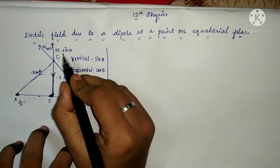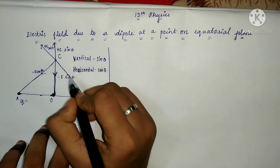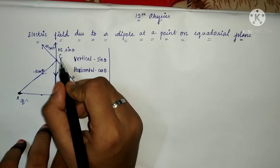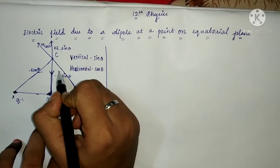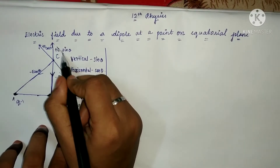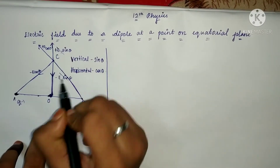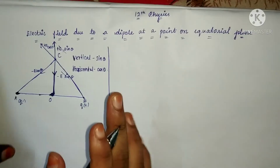The two vertical sin θ components are equal and opposite, so they cancel out. We cancel the same.